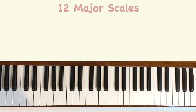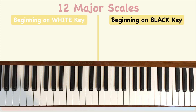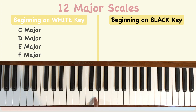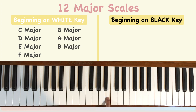Why are there 12 major scales? As mentioned in the last lesson, a scale can begin on any note on the piano. Last time we looked at the scale of C major. The remaining major scales are D major, E major, F major, G major, A major, and B major.